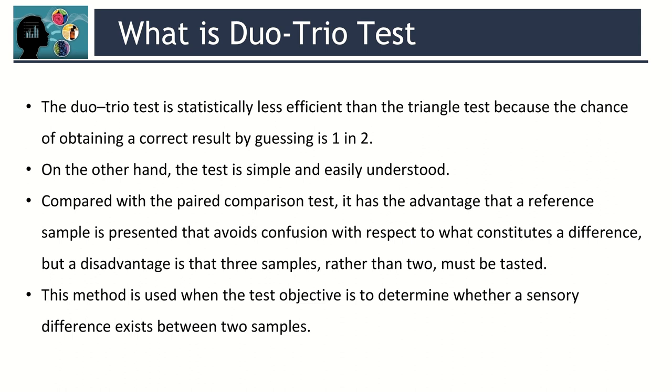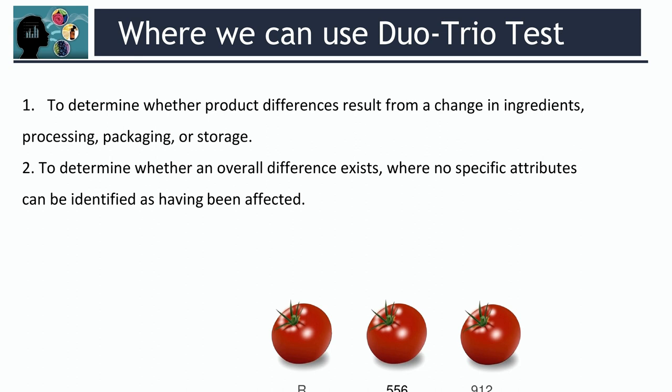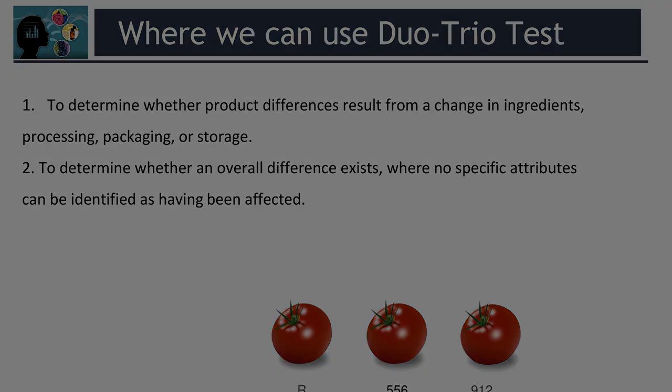This method is used when the test objective is to determine whether a sensory difference exists between two samples. We can use the Duo-Trio test to determine whether product differences result from a change in ingredients, processing, packaging, or storage, and to determine whether an overall difference exists where no specific attributes can be identified as having been affected.